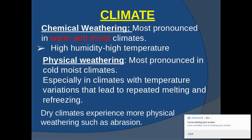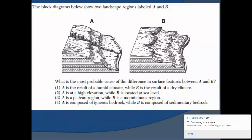Climate: chemical weathering most pronounced in warm and moist climates, high humidity and high temperatures. Physical weathering is most pronounced in cold, moist climates, especially in climates with temperatures that vary to repeated melting and refreezing. Dry climates experience more physical weathering, such as abrasion. Think about rock formations in dry areas - they have a very characteristic look because of the type of weathering that occurs.